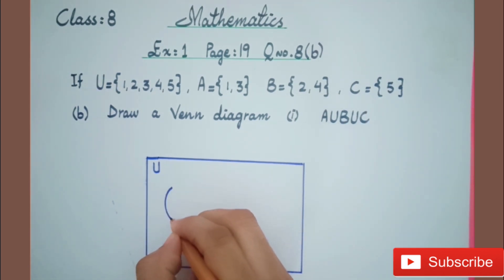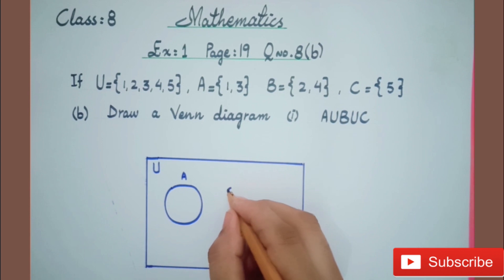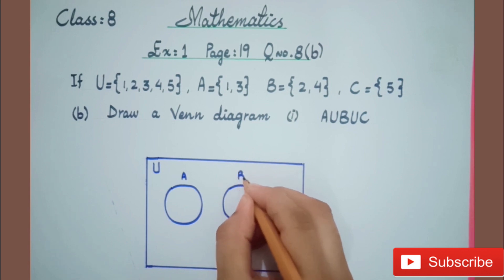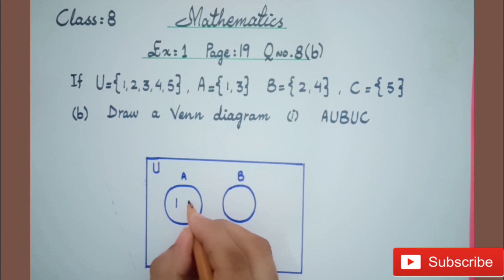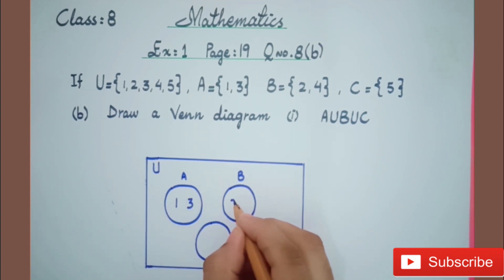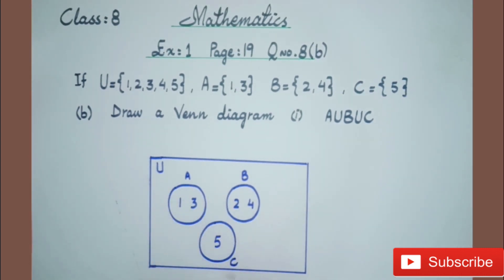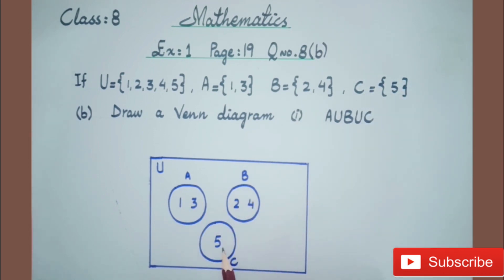Like this — we draw circle shapes for set A, set B, and set C inside the rectangle. Set A has elements 1 and 3, set B has 2 and 4, and set C has 5. The rectangle shape represents the universal set and the circle shapes represent our subsets — set A, set B, and set C — and we mention their elements inside the circles.